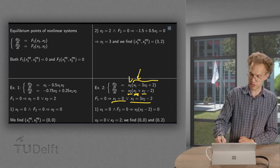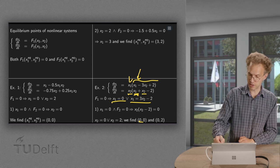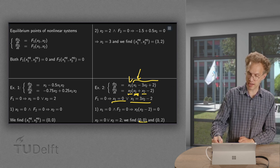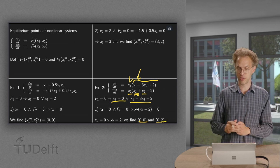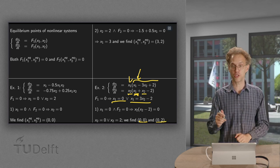then this part is already zero. So we're left with either x2 equals zero or x2 equals two. So in that case we find (0, 0) and (0, 2). So there we go. That's the first option.